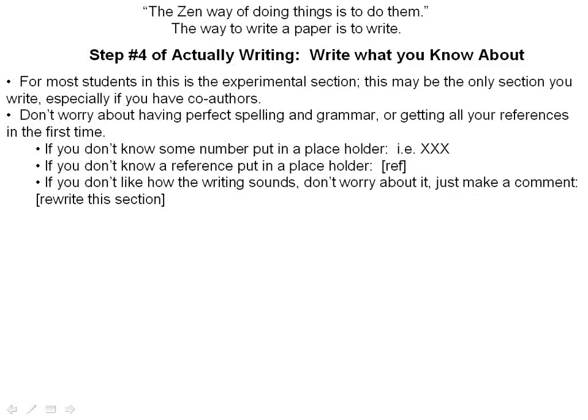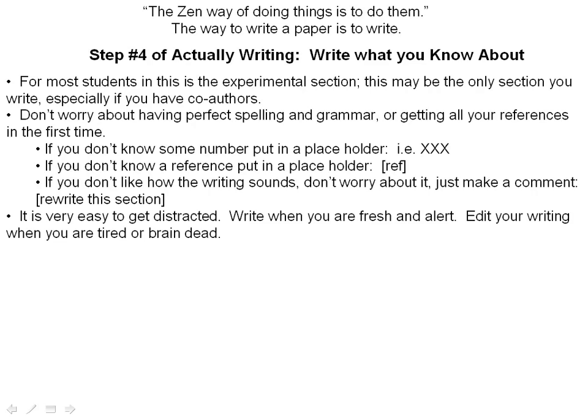As the quote at the top of the page says, the Zen way of doing things is to do them. The way you write a paper is to write. When you sit down to write, you write. Don't worry about spelling or grammar, and don't worry about putting in all the references. If you can't remember some number, put in a placeholder — I use XXX because it never appears anywhere else in my writing and I can find and replace it later. If you don't like the way the writing sounds, just comment 'rewrite this section,' color it red, and keep writing. You have to actually write, no matter how bad it sounds.